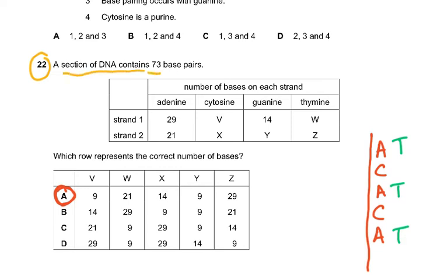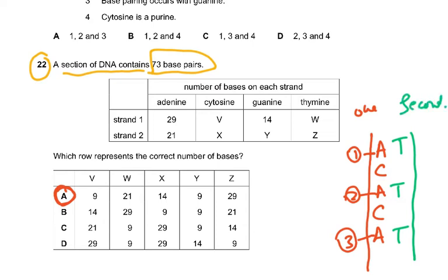Question 22: A section of DNA contains 73 base pairs. The number of bases on each strand - there are two strands which I've drawn in green. You can see here a very simple way I explain this to you. This is one adenine, this is the second adenine, and this is the third adenine. So this is one strand and this is the second strand.